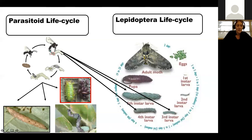Here are some examples where larvae are developing on the outside of the caterpillar body — and the caterpillar was actually alive when I took this photo. They'll remain alive for a while. Here you can see the pupal chambers of the parasitoid outside the lepidopteran.